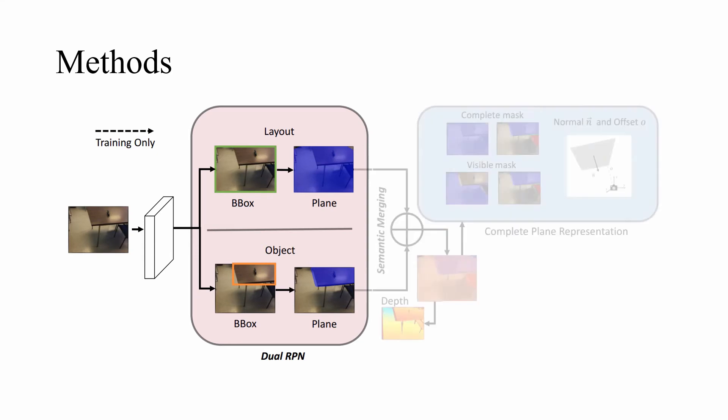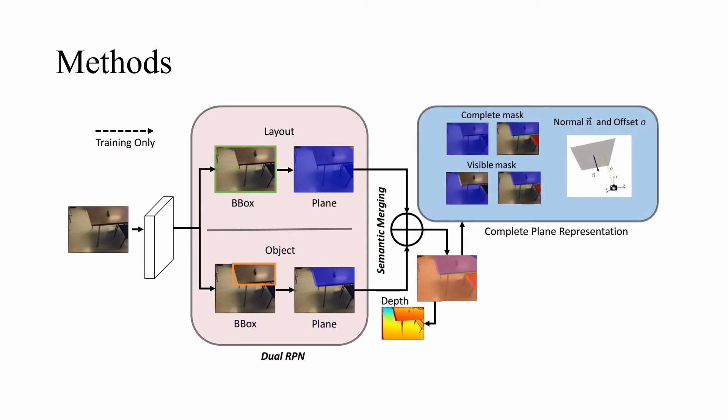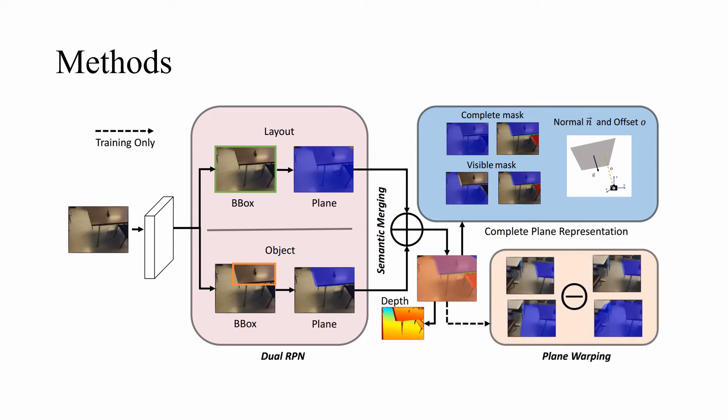Afterwards, the semantic merging module merges the plane predictions from the different branches. We also employ the plane warping module to enforce the consistency of prediction across neighboring views.